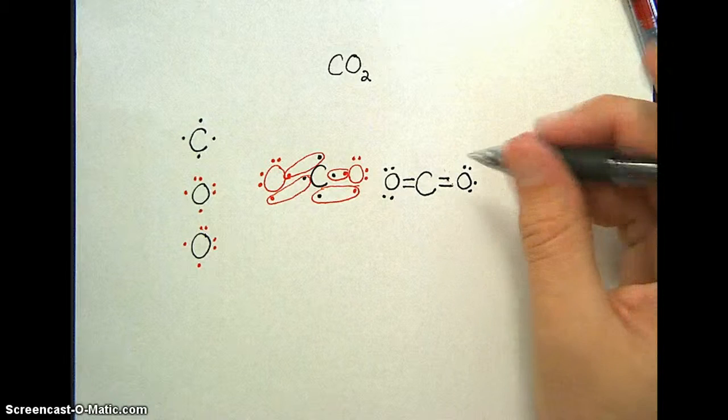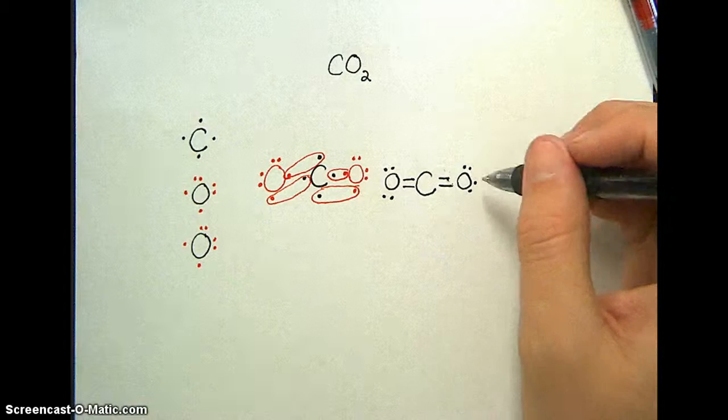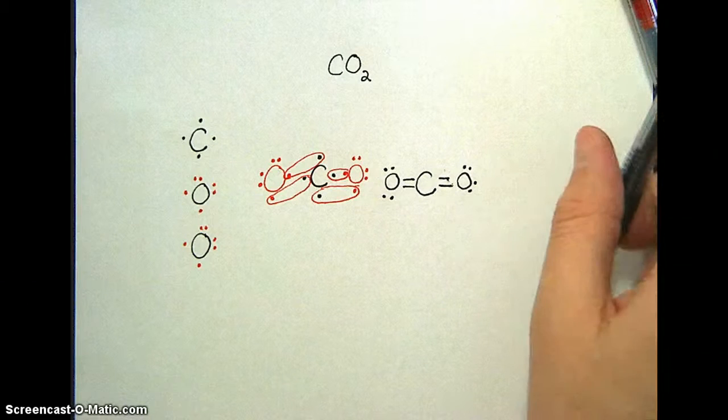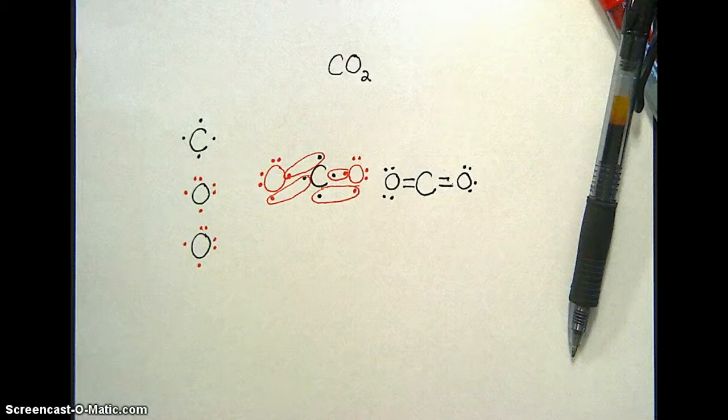And that's one way to model carbon dioxide. One carbon connected to two oxygens. So that each atom has access once in a while to 8 electrons, making them more stable.